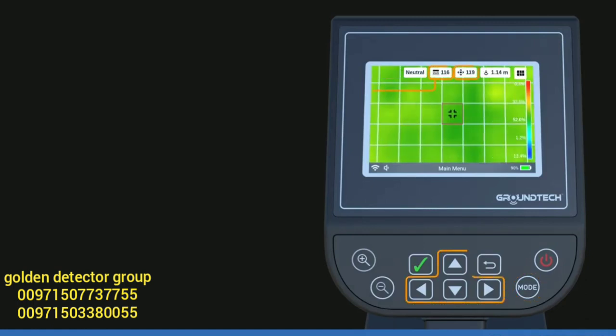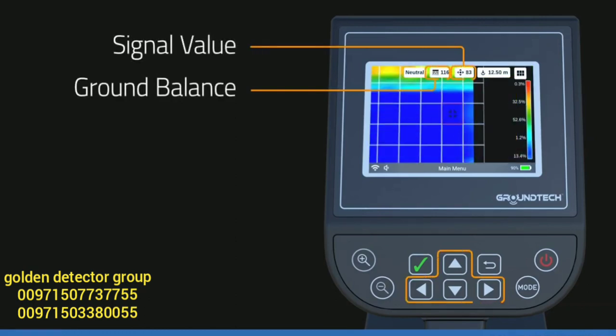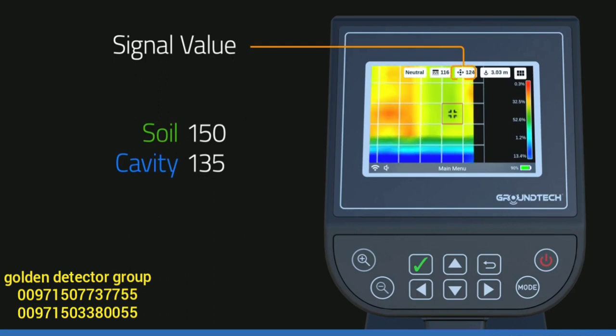When you go around the graph with direction buttons, you can see the soil balance value and numerical value of the selected point on the top bar. There must be a decrease of at least 15 points between the soil which is shown with green and grounds which are shown with blue.